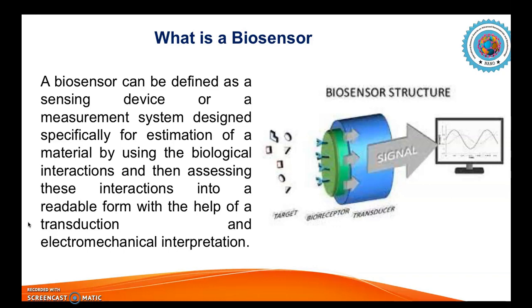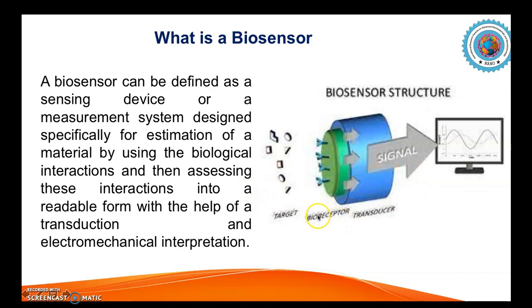On the right side is a flow diagram of how a biosensor is structured and how it works. We have targets, which can be any kind of particular target like a pathogen, a metabolite, or a ligand. Then we have a bioreceptor or biocatalyst that interacts with the target, such as a particular form of protein or ligand that will interact with the target. This interaction is captured by a device called a transducer, which senses the biomechanism between the target and the bioreceptor.